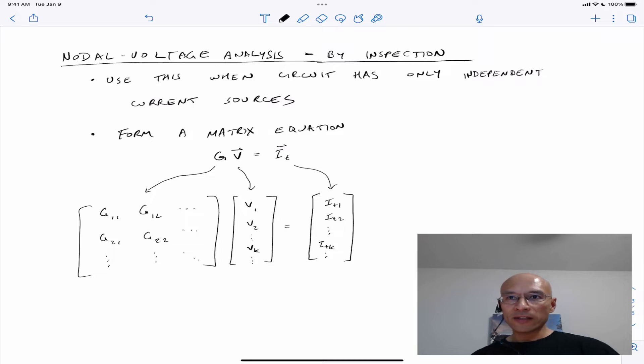So if you have dependent current sources, these are the ones that have a diamond-shaped symbol, can't use it. And if you have voltage sources, this isn't your best option. Only current sources. So maybe you could transform voltage sources into current sources, but I will just introduce the concept here.